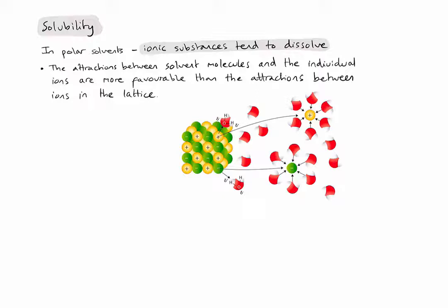When we place an ionic substance in water, the polar water molecules bump into the ionic lattice and have attractions to the individual ions in that lattice. For example, the partially negative side of a water molecule — the oxygen — will attract the positive ions in the lattice, whereas the partially positive side of a water molecule will attract the negative ions in the lattice. Because this is happening with lots of water molecules, we end up seeing the oppositely charged ions separated from the lattice and surrounded by water molecules, as shown on the right in the diagram.